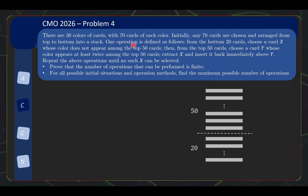Now let's look at what is meant by our operation. One operation is defined as follows. From the bottom 20 cards, choose a card X whose color does not appear among the top 50 cards. For example, if yellow doesn't appear in the top 50, then we can choose that card as X. Next, from the top 50 cards, choose a card Y whose color appears at least twice among the top 50. It's perfectly fine for that color to also be in the bottom 20 — it just needs to appear at least twice in the top 50. Finally, extract X and insert it immediately above Y, which bumps all cards below the insertion point down by one position. The lowest card in the top 50 then ends up pushed into the bottom 20.